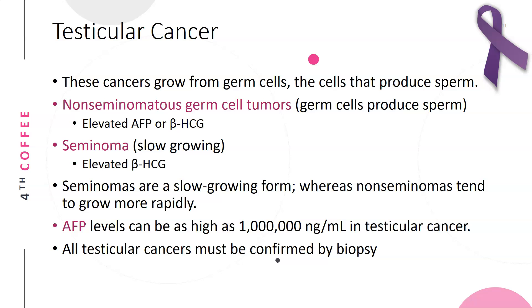Testicular cancer: these cancers grow from germ cells, which are the cells that produce sperm. Non-seminomatous germ cell tumors show elevated AFP or beta-hCG. Seminomas, which are slow growing, show elevated beta-hCG. AFP levels can be as high as one million nanograms per milliliter in testicular cancer — another case where you would need to dilute heavily to get a valid result. All testicular cancers must be confirmed by biopsy.